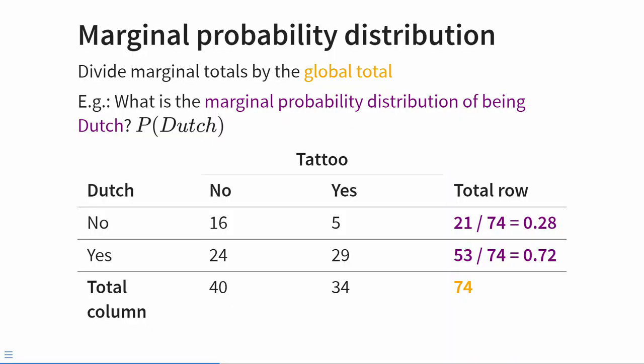It's quite easy to calculate different probabilities from frequency distributions — all you have to do is divide by an appropriate total. We can convert marginal frequency distributions to probability distributions by dividing by the global total. In this example the global total is 74 participants. Dividing 21 international students and 53 Dutch students by 74 gives us the marginal probability distribution: there's a 28% probability of randomly selecting an international student and a 72% probability of selecting a Dutch student.